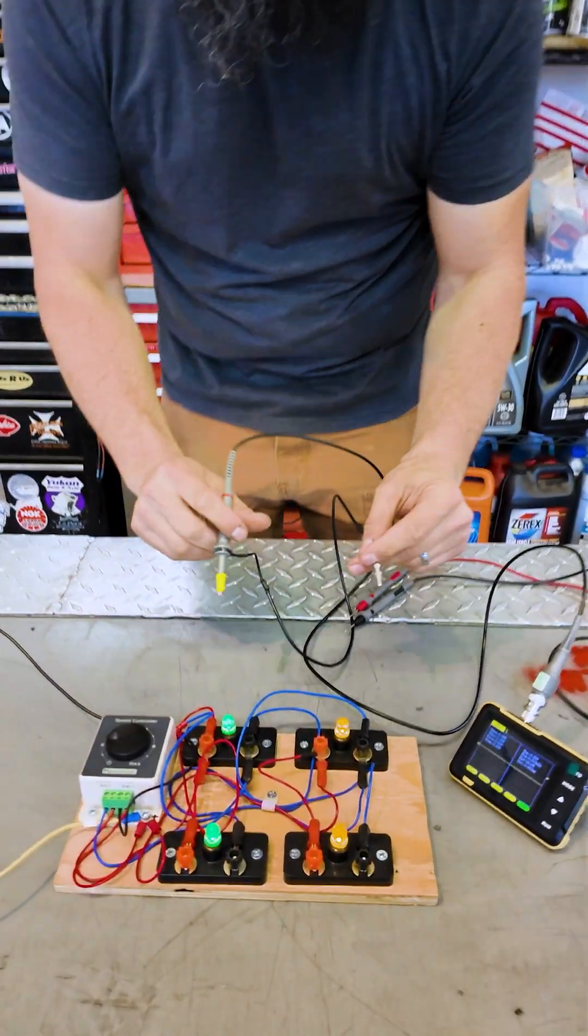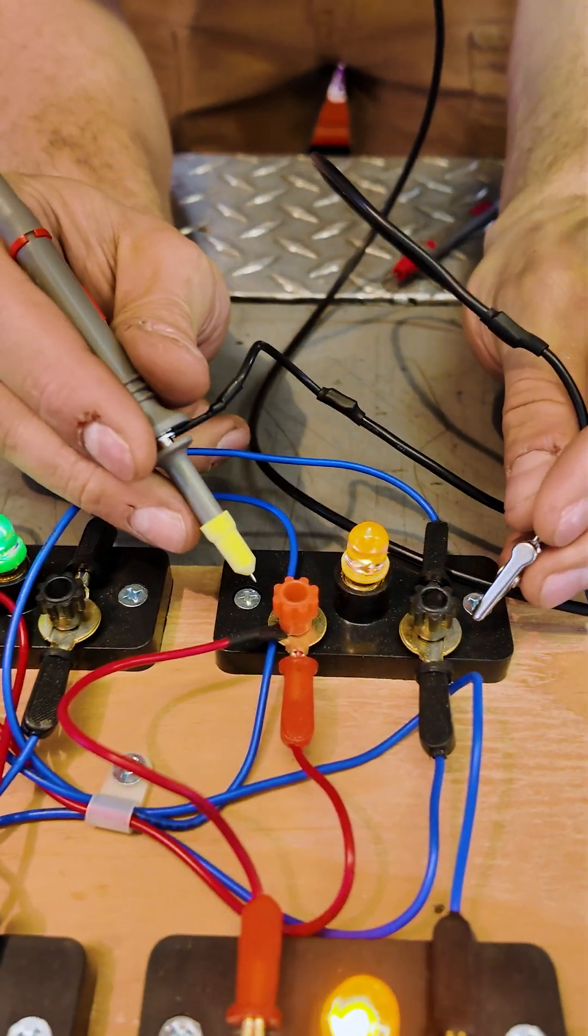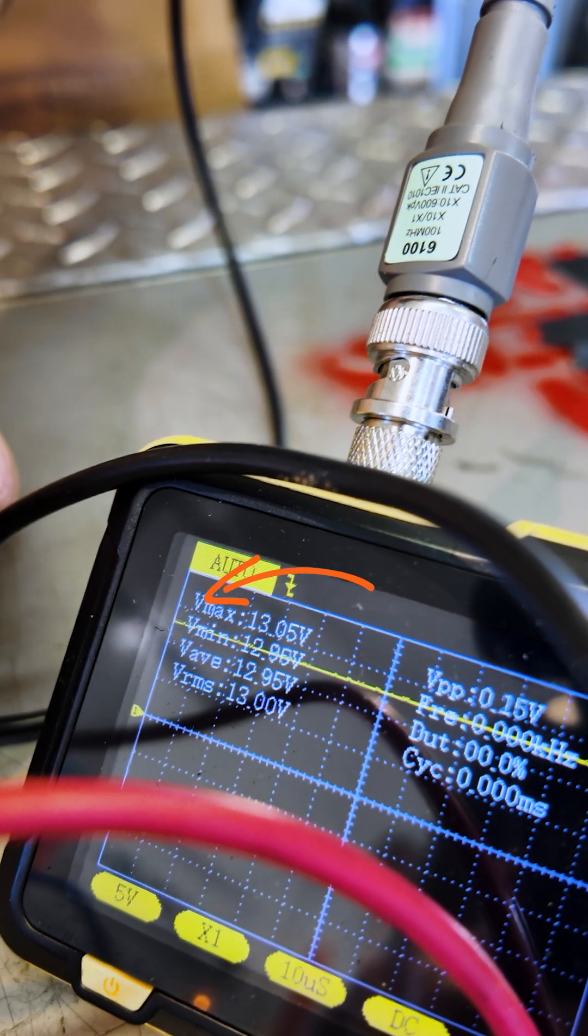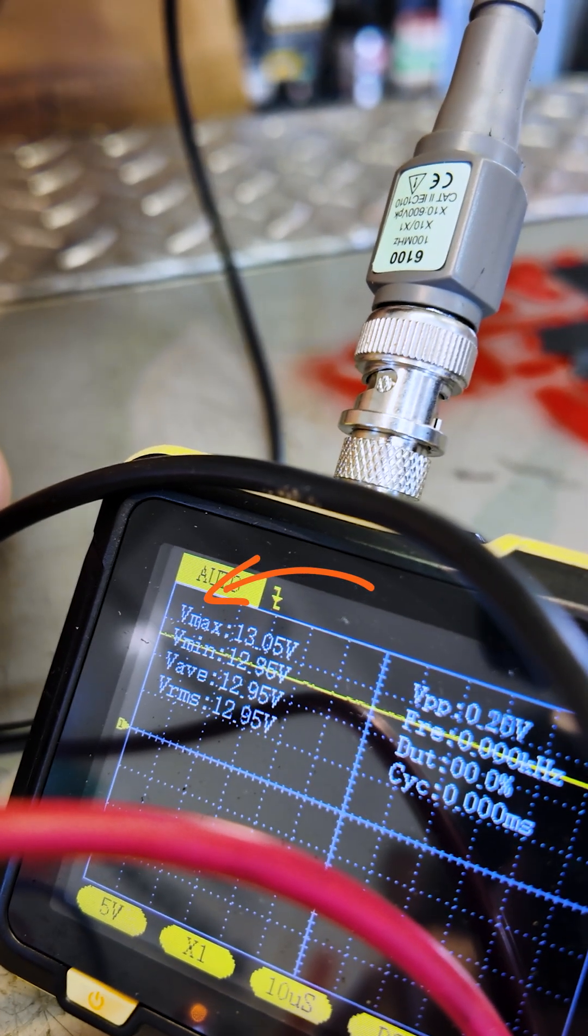So if we hook up our scope over here, we come to the older car. Great, we hook up and we're showing a nice solid voltage, exactly what you'd expect to see coming out of there.